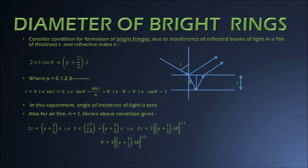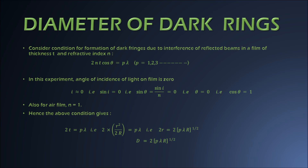In the Newton's rings experiment the angle of incidence is almost zero because light is incident in a vertically downward direction on the air film. Using this we can find an expression for the diameter of bright rings in the Newton's rings experiment. Now let us also address the diameter of dark rings.